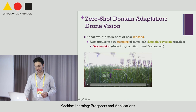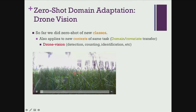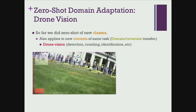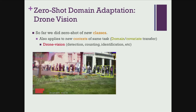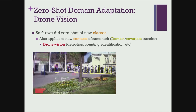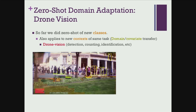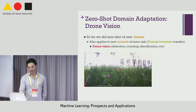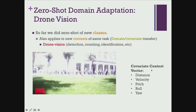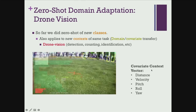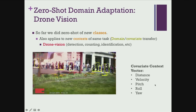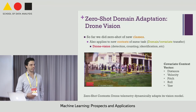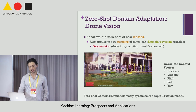Another application we are working on is drone vision. Drones can do person detection, counting, identification, and tracking, but they see people from very different directions, speeds of motion, and angles — all covariates that affect what the drone sees. Training one model on everything won't work well, but there are also too many possible covariates to train a separate model for each. We hope to use zero-shot context vectors to let the drone dynamically adapt its vision model on the fly.